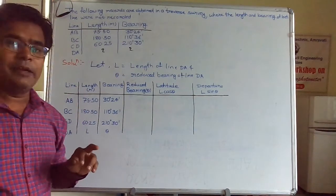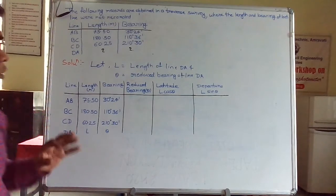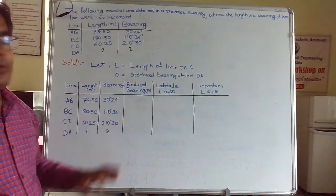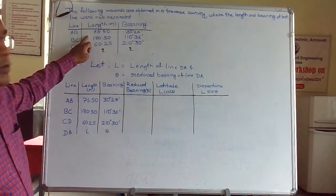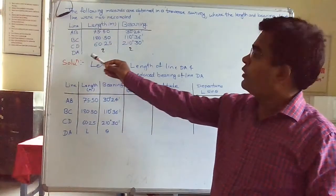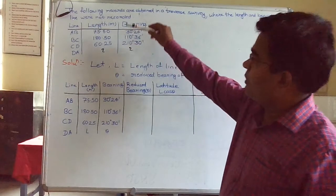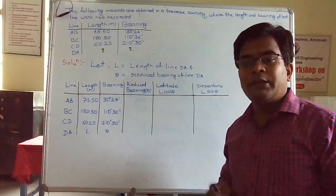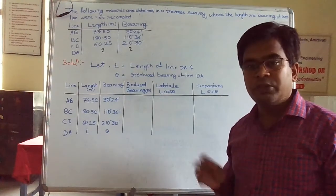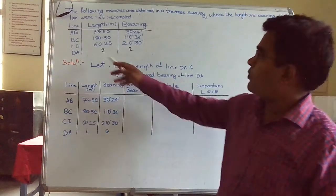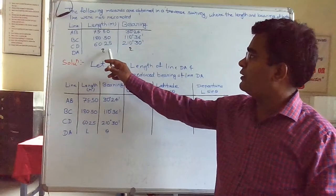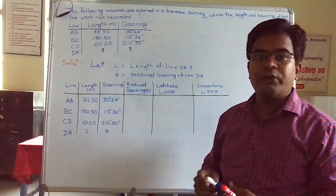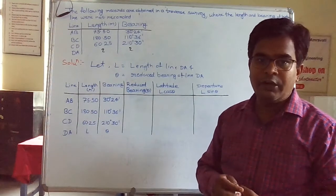So how can we find it out? We have to compute a table with columns for line, length, bearing, reduced bearing, latitude, and departure for each line. We will sum up the latitudes and departures — as per the rule, the summation of latitudes and summation of departures for a closed traverse should be zero. We will assume length L and bearing theta for line DA, and then by calculation find them out.